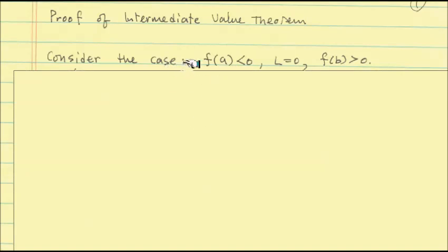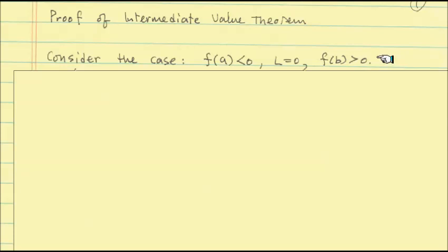Here is the fundamental case we want to deal with. The intermediate value is not some arbitrary number — it is going to be zero, and f(a) and f(b) are in a very special setting: f(a) is a negative number and f(b) is a positive number. If you take care of this case, for general cases you can do simple arithmetic to take care of the rest. So this is the fundamental case, reduced to a much simpler situation.